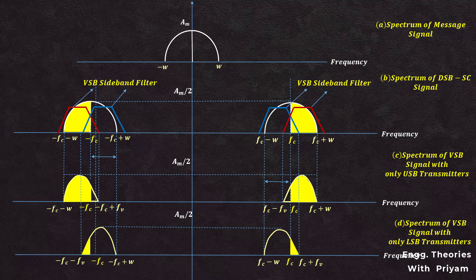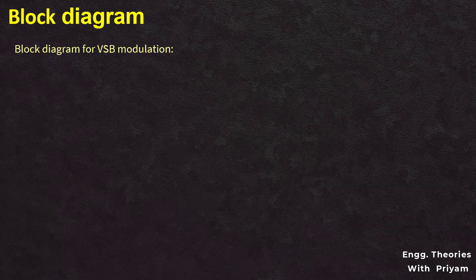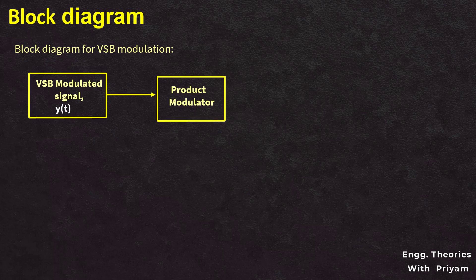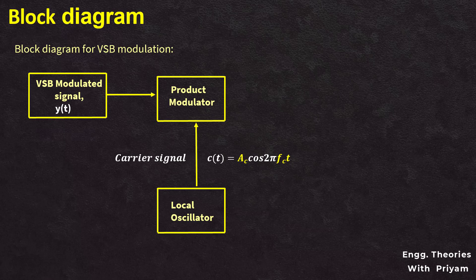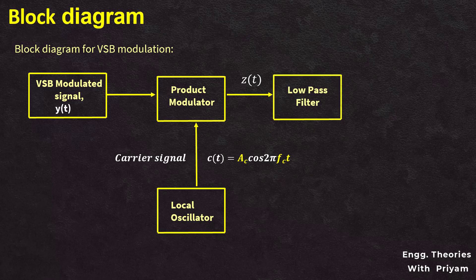Let's see how to demodulate this VSB modulated signal. We will look at the block diagram for demodulation. To demodulate the VSB modulated signal, the VSB modulated signal Y(T) and the carrier signal from the local oscillator, AC·cos(2πFC·T), are given as inputs to the product modulator. The output of this product modulator is Z(T). This Z(T) is passed through a low pass filter, which eliminates the high frequency terms. After low pass filtration, we get the scaled version of the message signal M(T) as the output.